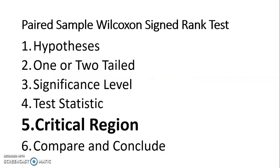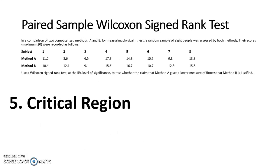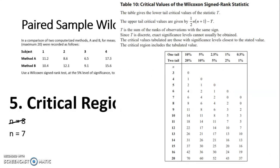Step five is finding the critical region. To find it I need my value of n. We had n = 8, however subject six had a difference of zero and was discounted, so that reduces n to 7 — it's really important not to miss that. Turning to statistical table 10 towards the back of the booklet, for a one-tailed test at the 5% significance level with n = 7, my critical value is 4 and the critical region is less than or equal to 4.